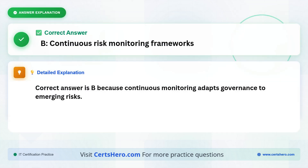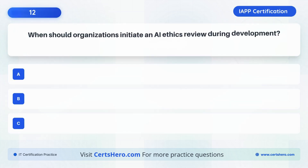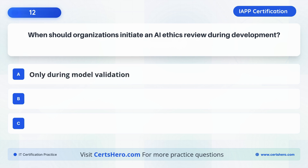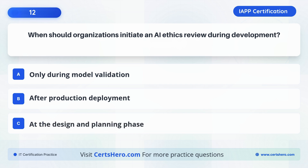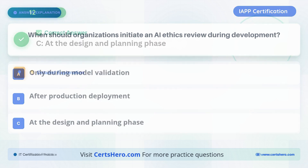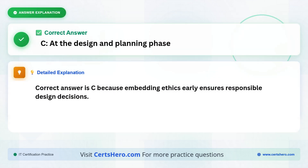When should organizations initiate an AI ethics review during development? A. Only during model validation. B. After production deployment. C. At the design and planning phase. The correct answer is C: At the design and planning phase, because embedding ethics early ensures responsible design decisions.